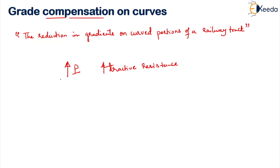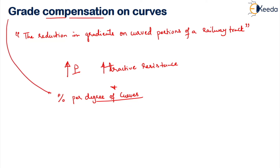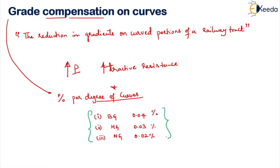Normally, grade compensation in Indian railways is expressed as a percentage per degree of curve. The recommendations in Indian railways are: for broad gauge track, a 0.04% reduction is applied; for metre gauge track, a 0.03% reduction; and for narrow gauge, a 0.02% reduction. These are the standards of grade compensation in Indian railways.